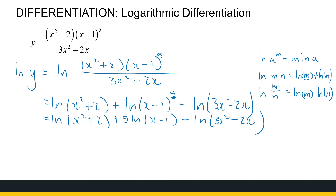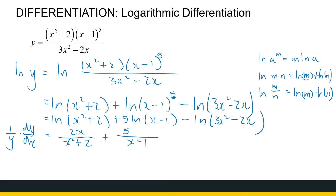Would you rather differentiate the original function or this expanded log form? The expanded form has less chance for mistakes because we just apply the chain rule to each ln term. The derivative of ln(u) is 1/u times u'. So using implicit differentiation: the derivative of ln(y) is (1/y)·dy/dx. On the right-hand side, the derivative of ln(x² + 2) is 1/(x² + 2) times 2x, plus 5 times 1/(x − 1) times 1, minus 1/(3x² − 2x) times (6x − 2).